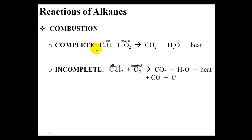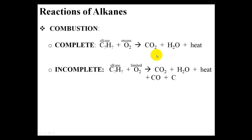If on the other hand you don't have enough oxygen — limited oxygen — you will instead produce carbon monoxide and carbon soot in addition to CO2. Because you don't have enough oxygen to create CO2 all the time, you will create carbon monoxide and carbon soot, so ashes. Complete and incomplete combustion are the same reaction, except with incomplete combustion you get leftover byproducts like carbon monoxide and carbon soot.